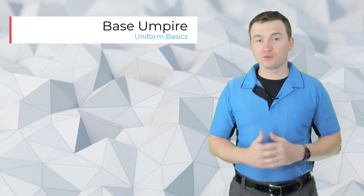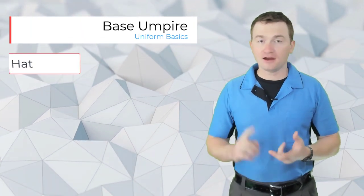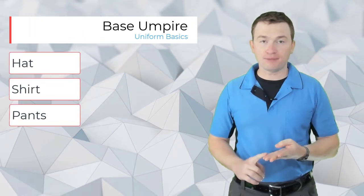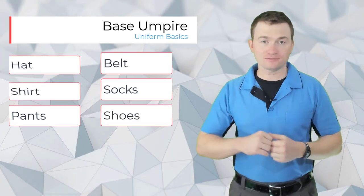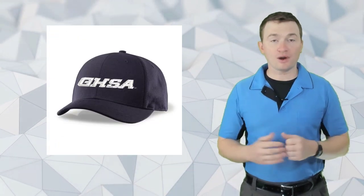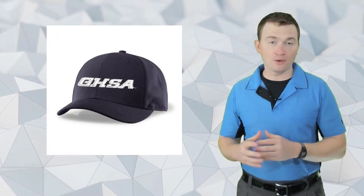First let's talk about the uniform for an umpire working the bases. This includes a hat, shirt, pants, belt, socks, and shoes. For the hat, most often you'll wear one associated with the game or league you're working for. For our GHSA umpires, when working a GHSA baseball game they'll be required to wear a hat with the GHSA logo on it.